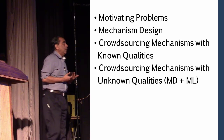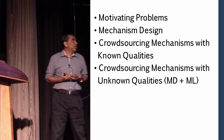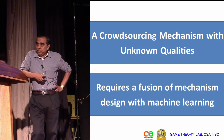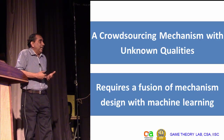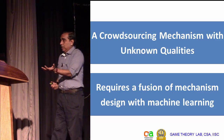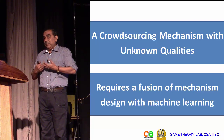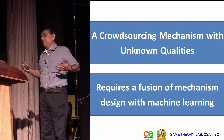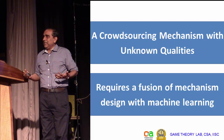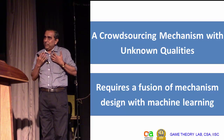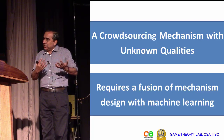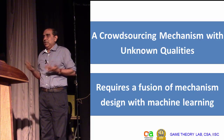If you are talking about how crowdsourcing can be leveraged when you do not know the qualities, it becomes a very interesting problem. It now requires a fusion of mechanism design with machine learning, because you do not know the qualities and have to learn them. But if the players being strategic manipulate the learning algorithm, then you have a problem. Game theoretic players can actually manipulate your learning algorithm, so designing a learning algorithm that is robust to possible manipulations becomes a very important issue.